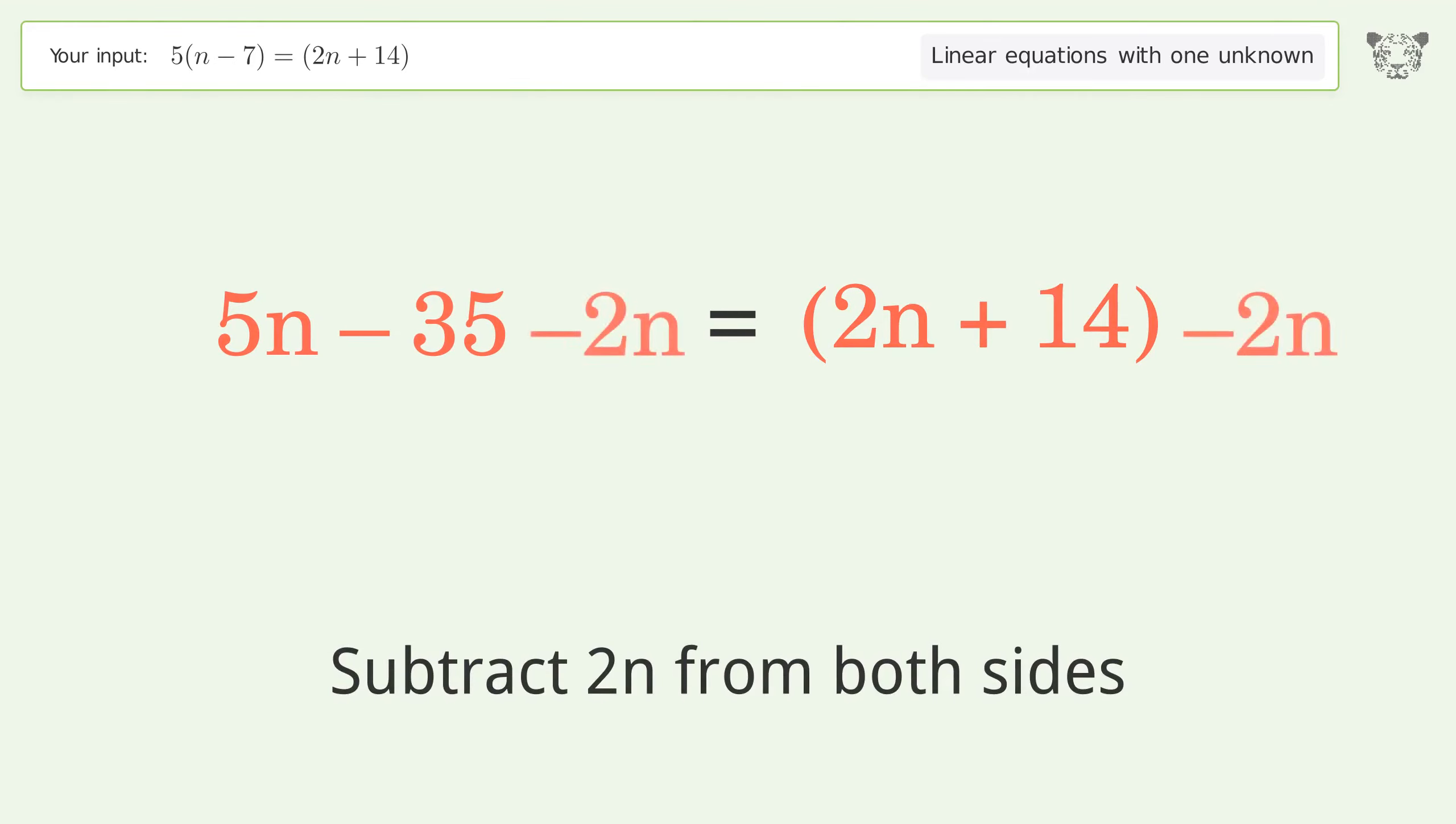Group all n terms on the left side of the equation. Subtract 2n from both sides.